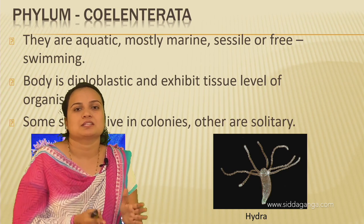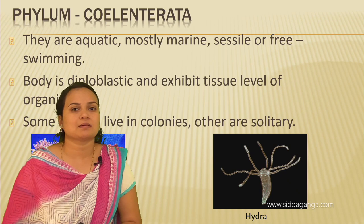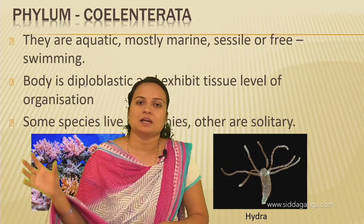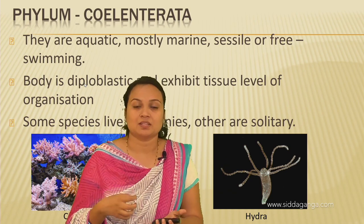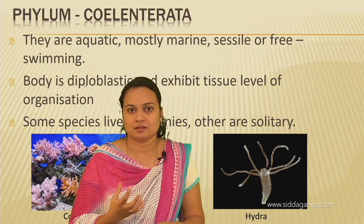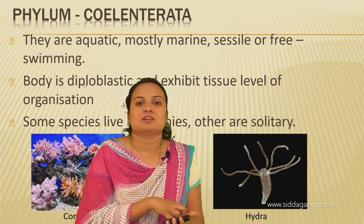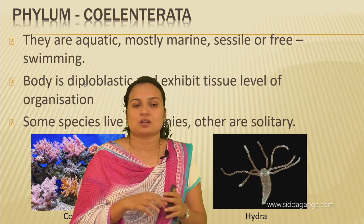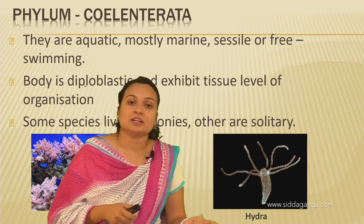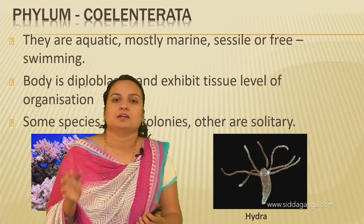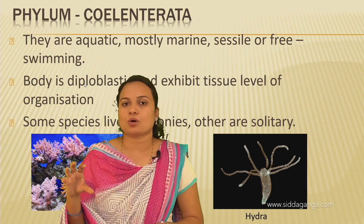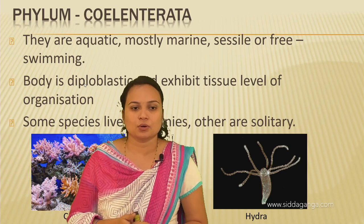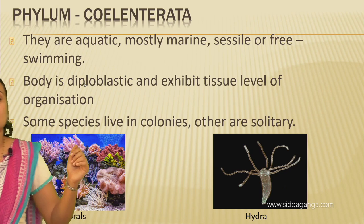To summarize the general characters of Phylum Cnidaria: they are tissue level organisms, the body is diploblastic, some live in colonies and some are solitary, and some are sessile while some are free living. Moving on to the next phylum — Phylum Platyhelminthes.